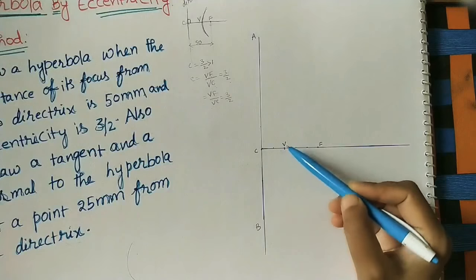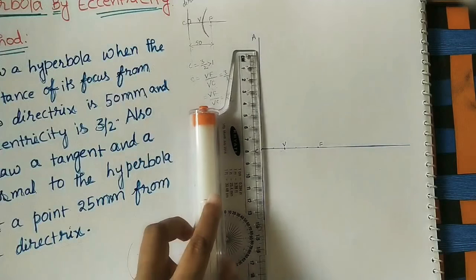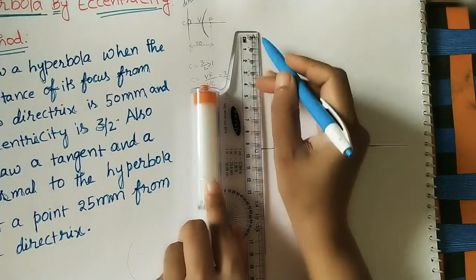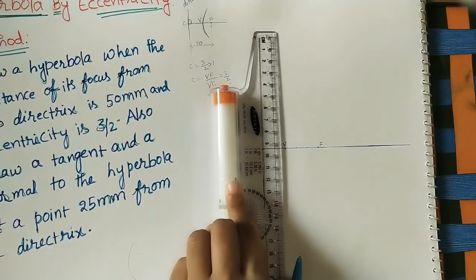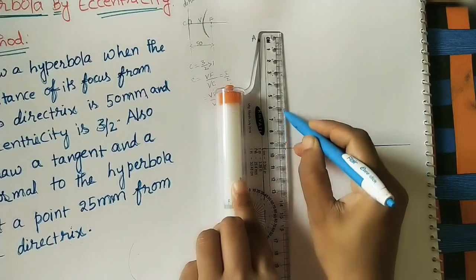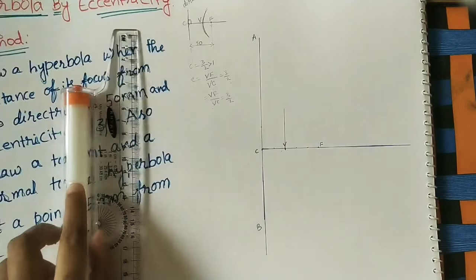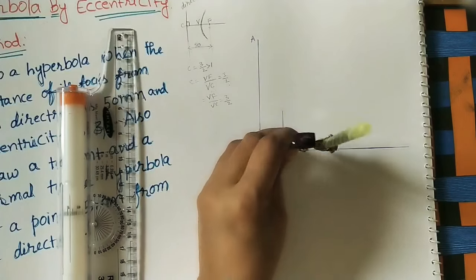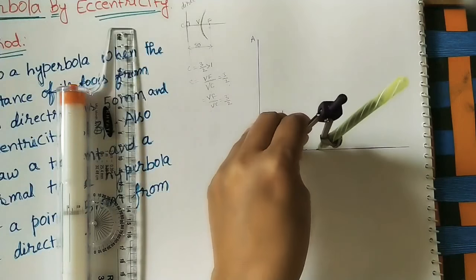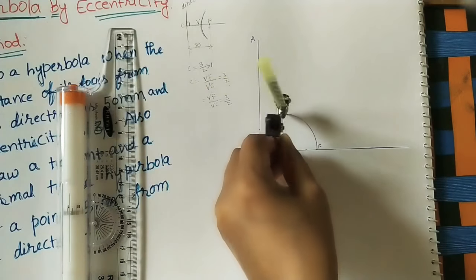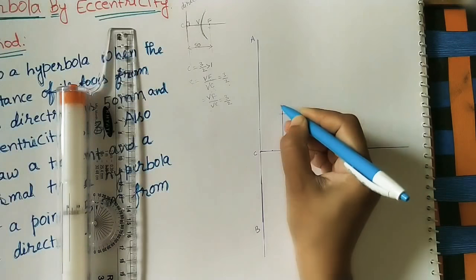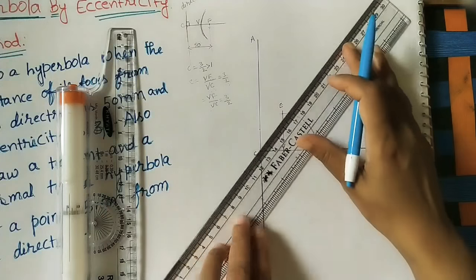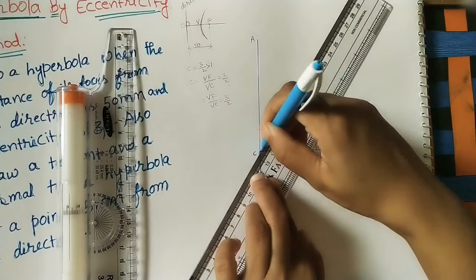After marking V, at V draw one vertical line of some length. I am using a roller scale, keeping it on the directrix as reference, then moving it to V to draw the vertical line. Then, take the VF distance by compass and draw an arc up to this vertical line. Take this intersection point as E. Then join C and E using the scale, extending to some length.